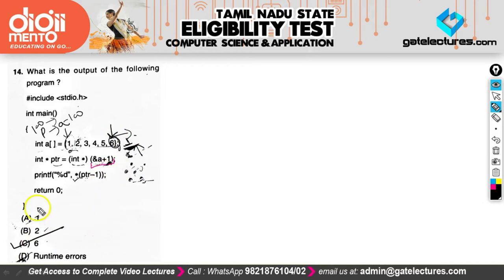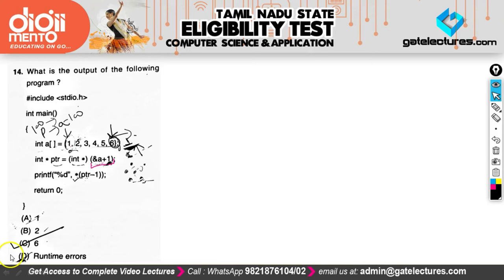The answer is not 1, 2, or a runtime error. The program is correct and the output is 6. You can compile this code and verify — you will get 6 as the answer.